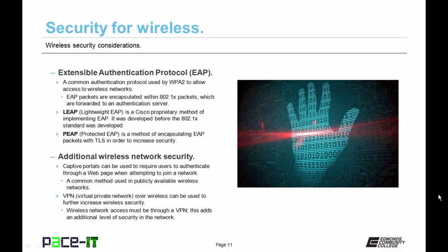There are different versions of EAP — Extensible Authentication Protocol — which is a common authentication protocol used by WPA2. There is LEAP, or Lightweight EAP, which is a Cisco proprietary method of implementing EAP developed before 802.1x was standardized. Then there's PEAP, Protected EAP, which encapsulates EAP packets with transport layer security encryption in order to increase the security of the wireless transmission.